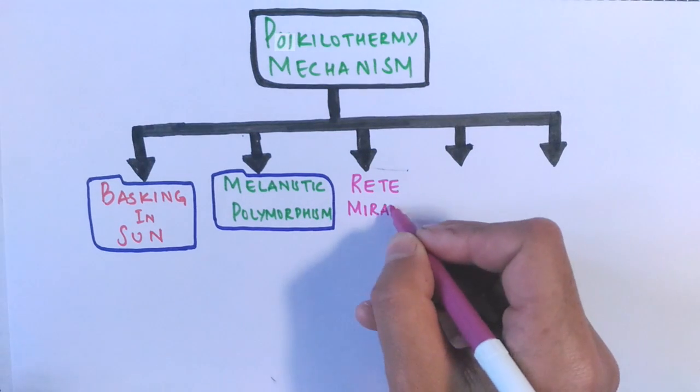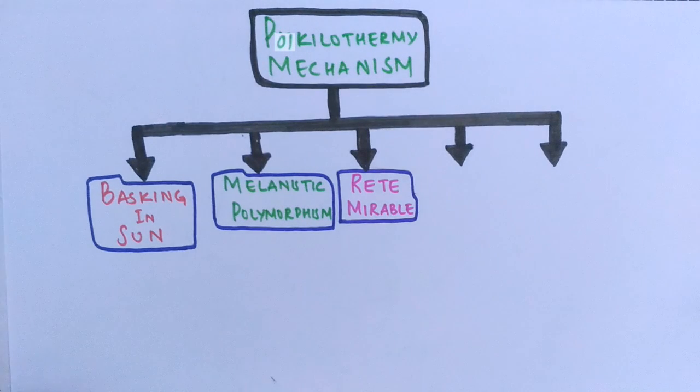Third mechanism includes rete mirabile. A rete mirabile is a complex of arteries and veins lying very close to each other, and from these structures they are able to regulate the body temperature by exchanging the heat from these structures. And this thermoregulation occurs mostly in fishes, like we have seen in bluefin tuna for example.